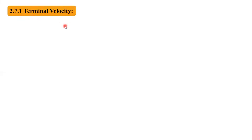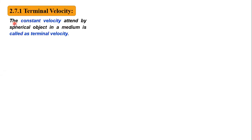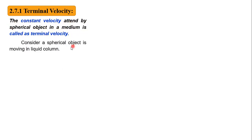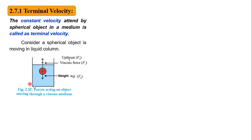The next article is terminal velocity. Terminal velocity means the constant velocity attained by a spherical object in a medium. Now we have to obtain an expression for terminal velocity, so we consider a spherical object moving in a liquid column. You can see this diagram — this is the liquid column and this is the spherical object.